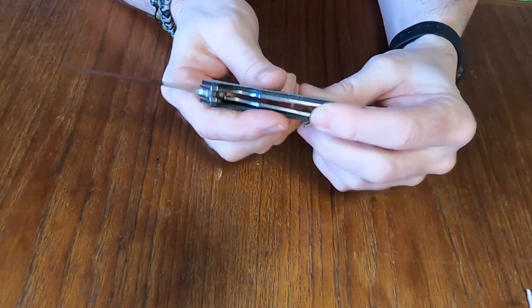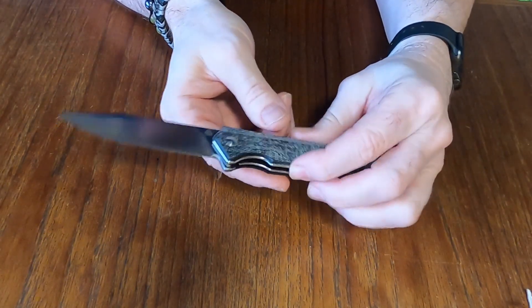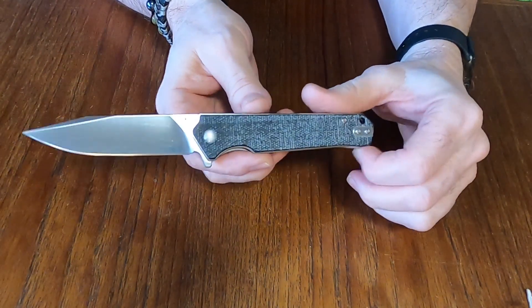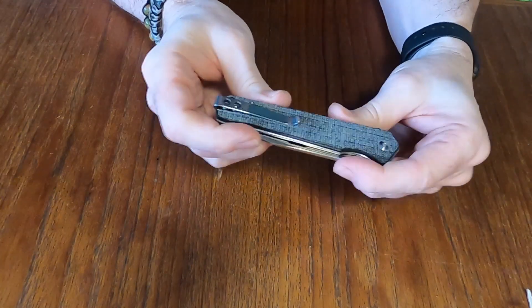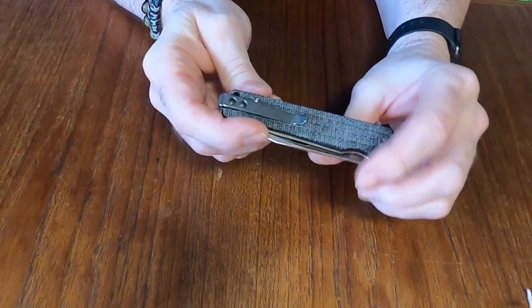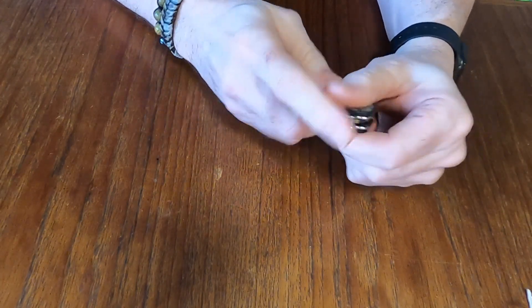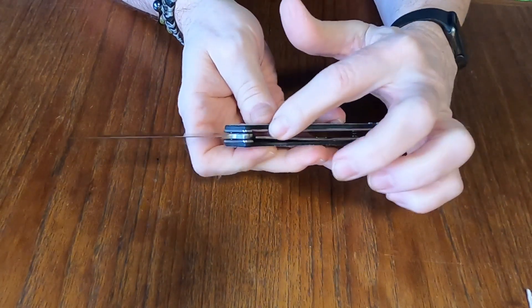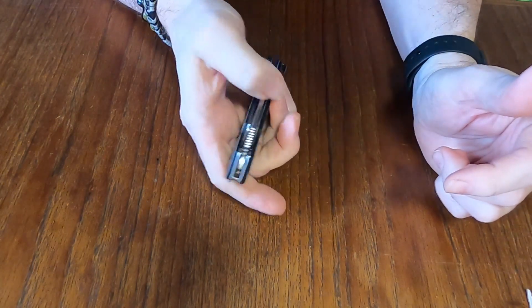The pocket clip is reversible, deep carry, tip-up configuration and the locking system is a liner lock. There's fairly easy access to the liner lock which is nice, it's always good to be able to get it that easy.